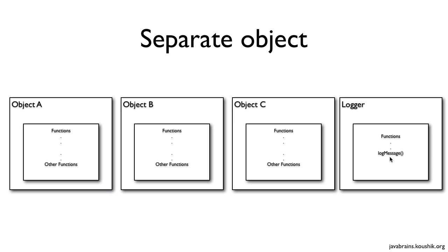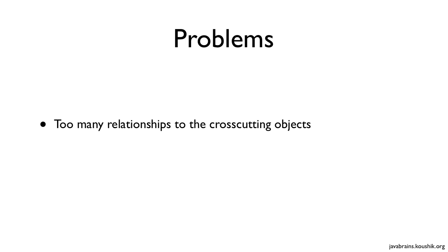This is good, but there are a couple of problems. First, if you write a diagram depicting relationships between objects, the most connected object would probably not be your business object — it would be the logger object, because every object that needs logging has a dependency on it. It's not a good idea to have so many dependencies to something that is not part of your business problem. The logger object is not adding business value — it's just doing a support role. You have too many relationships to these cross-cutting objects.